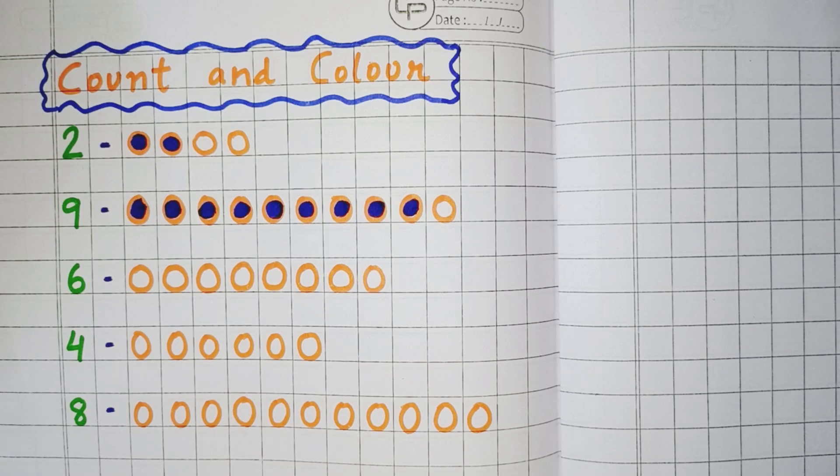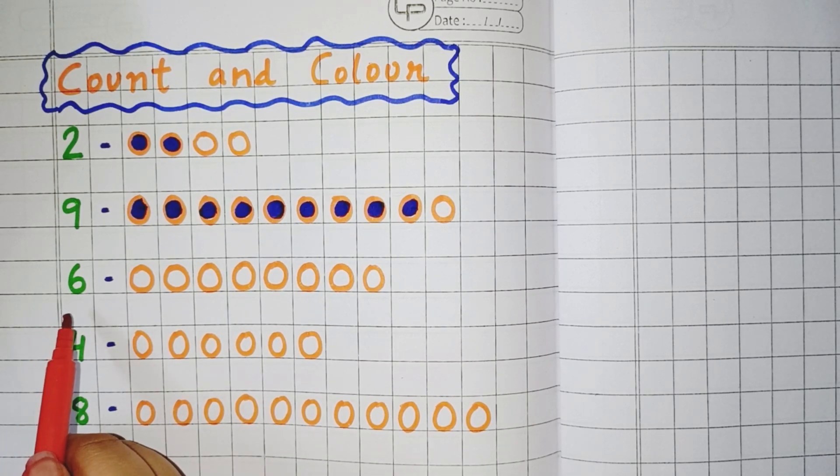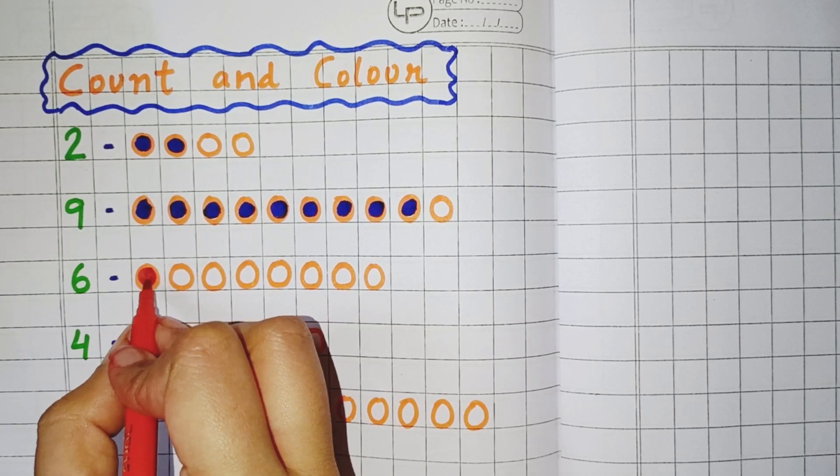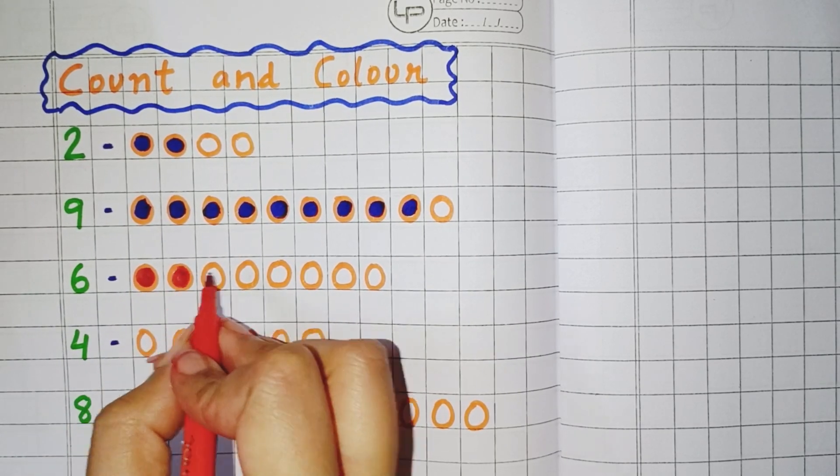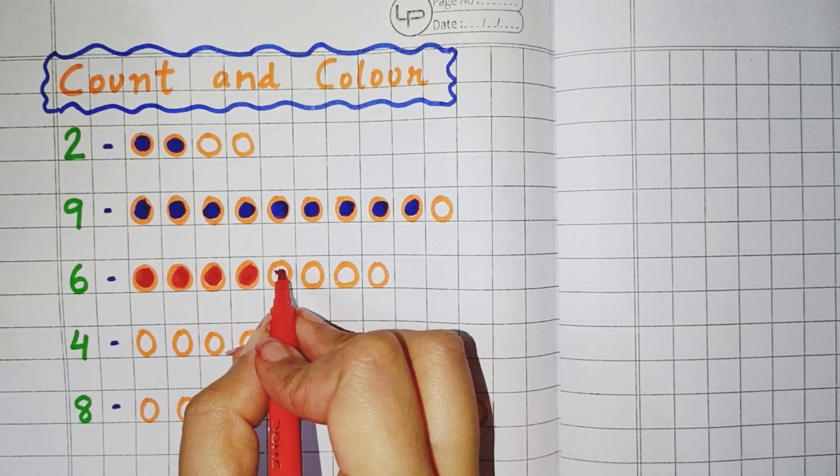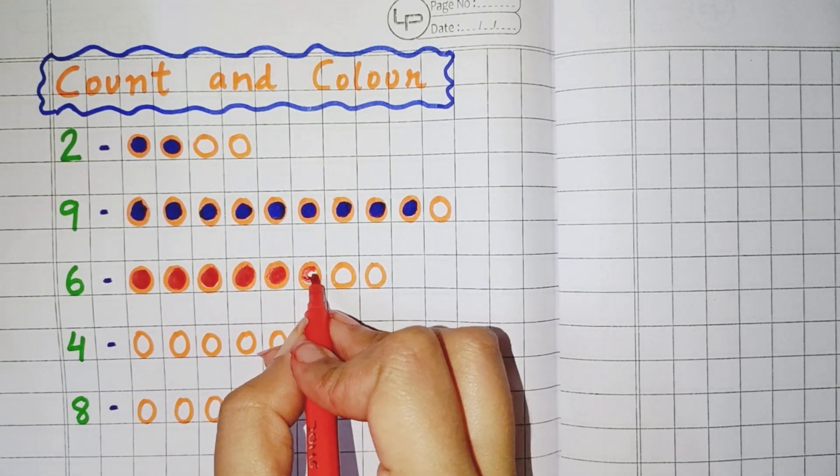Now you can see the next number here is 6. So you will color 6 objects. 1, 2, 3, 4, 5, 6.